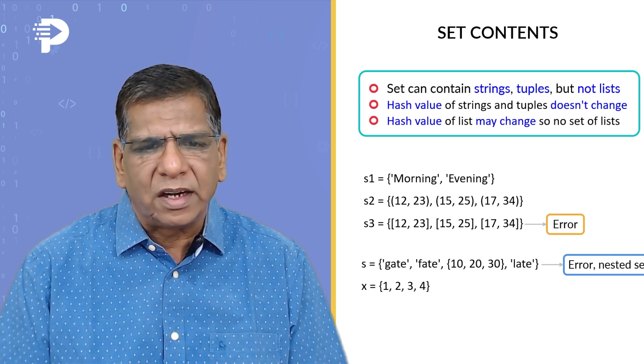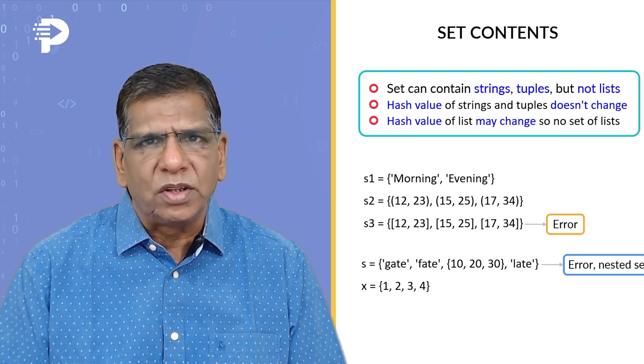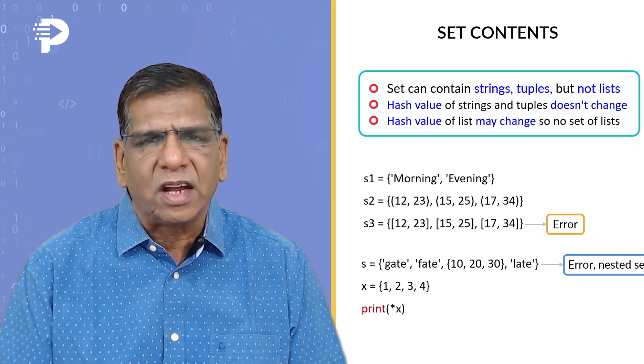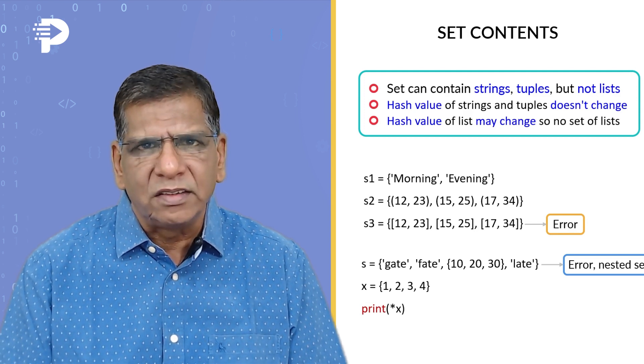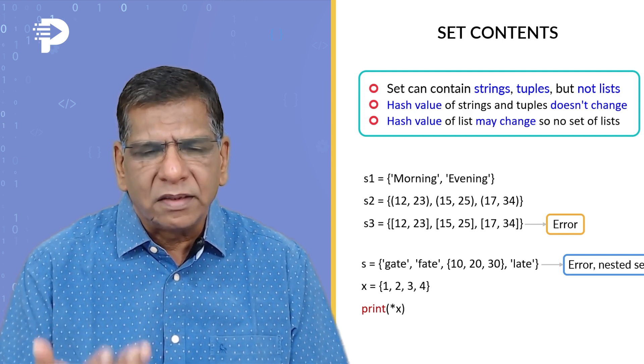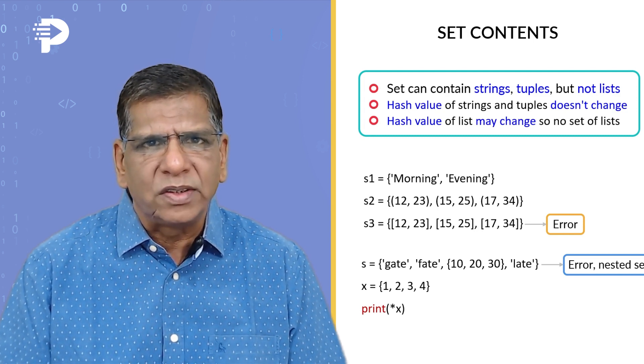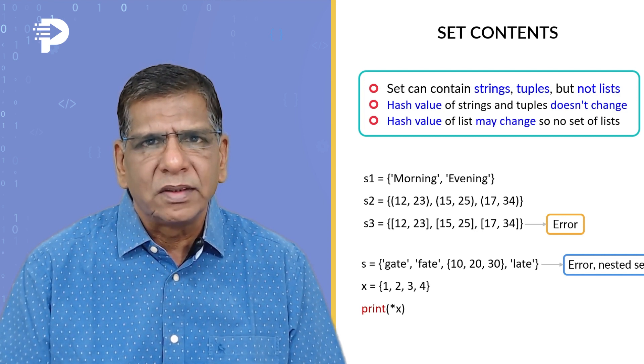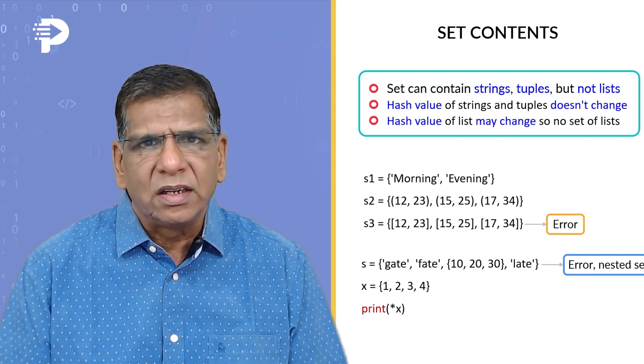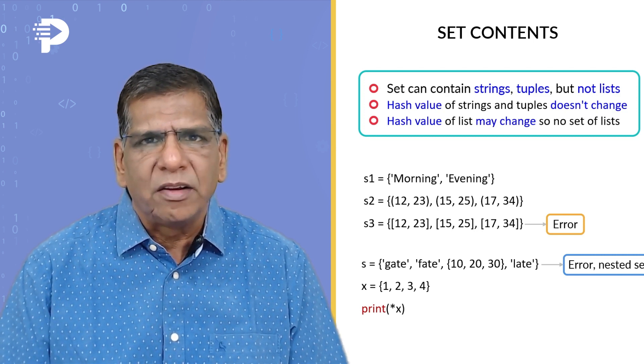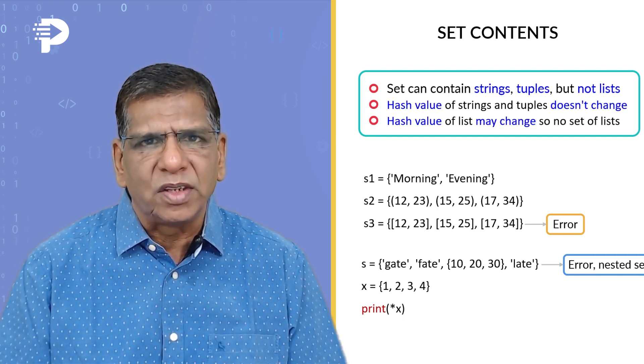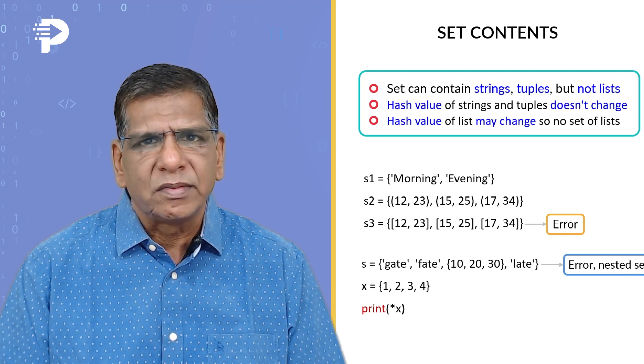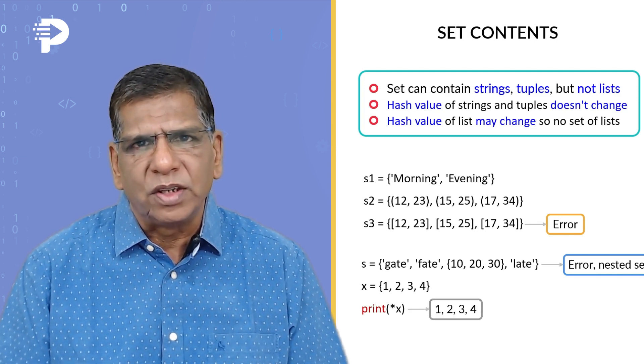And if I have a set like this containing values 1, 2, 3, 4, I can easily unpack those values by saying star of x. We had seen this unpacking. Same unpacking concept can be applied to a set. You can unpack elements of a set by saying star of x. This unpacking we have talked about in relation to list, in relation to tuple, where we could unpack both of them using a star. Well, same is applicable even to a set. So 1, 2, 3, 4 is the output that we expect.